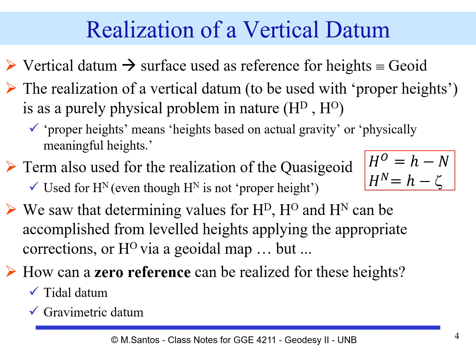We want to get the proper heights, either the dynamic height or the orthometric height. By proper heights, I mean heights based on actual gravity, or physically meaningful heights. The term realization of a vertical datum also refers to the use of a quasi-geoid as a reference surface. In this case, we will be using the normal heights, even though the normal heights are not proper heights — they're not physically meaningful. The relationship that we can establish is given here.